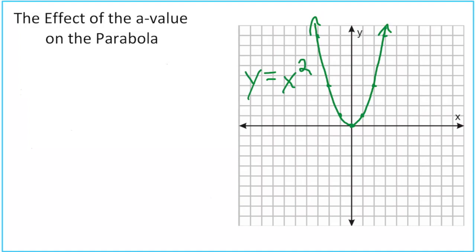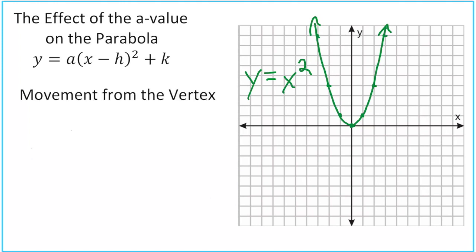In this video we're going to take a look at the effect of the a value on the parabola. Let's start by looking at our vertex form. There's your a value: y equals a times x minus h squared plus k. What we do is look at the movement from the vertex.